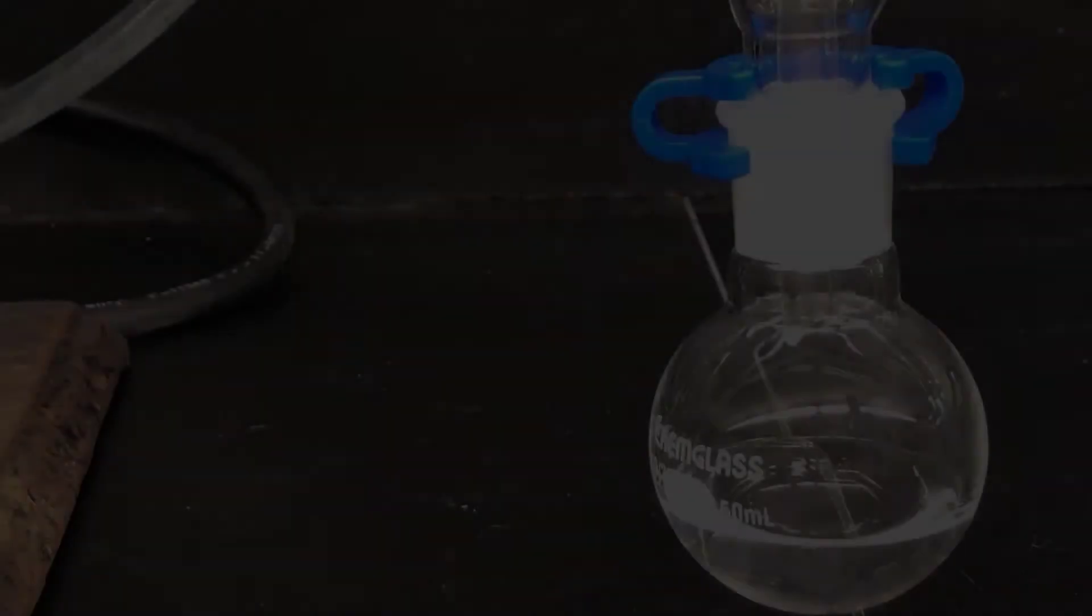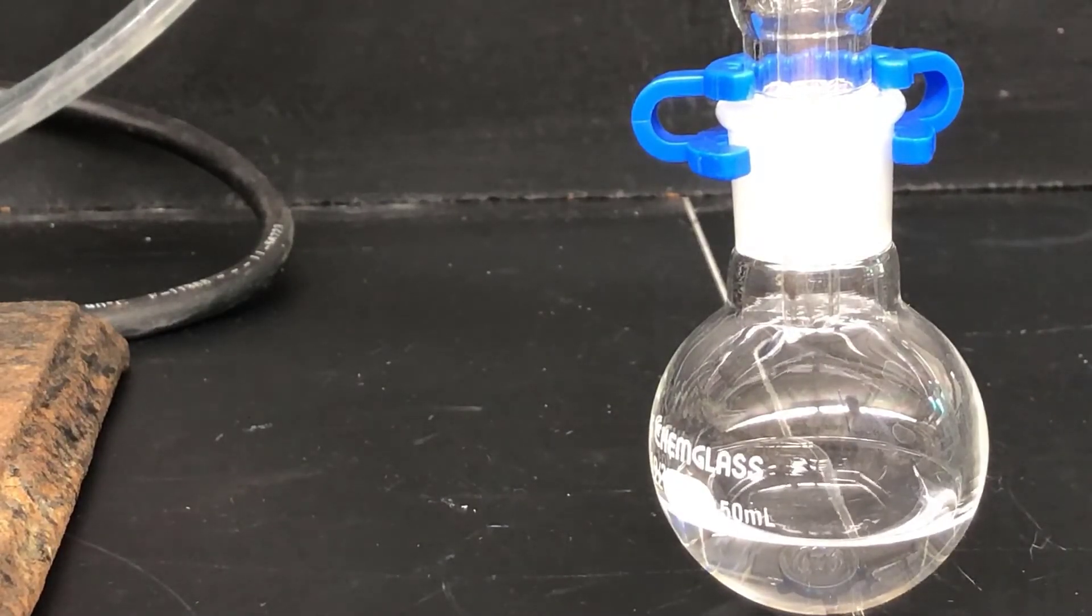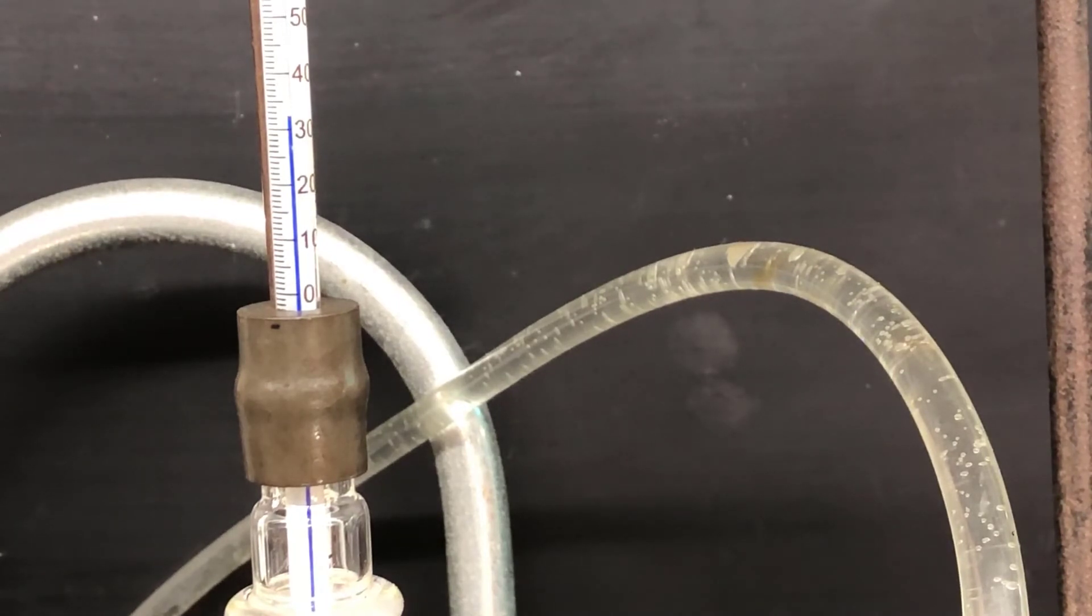As the distillation nears completion, you'll notice the drip rate slowing significantly, as shown here. You may also notice the temperature on the thermometer beginning to drop, because there isn't enough vapor coming over anymore to keep the thermometer warm.